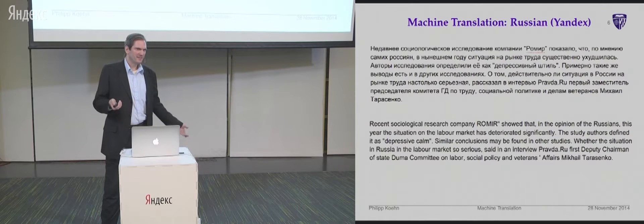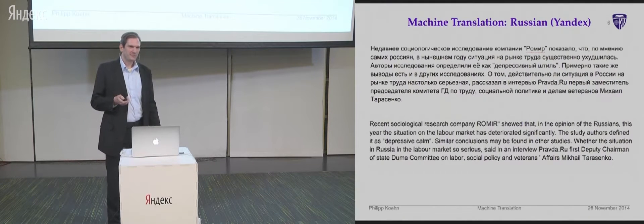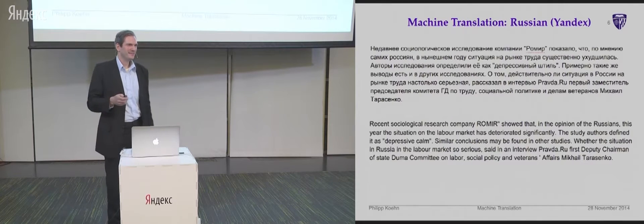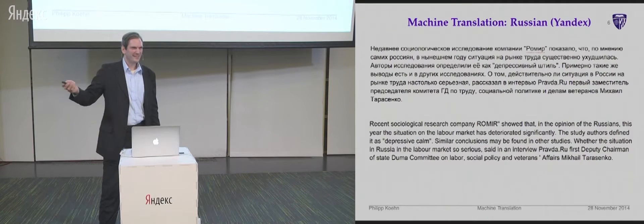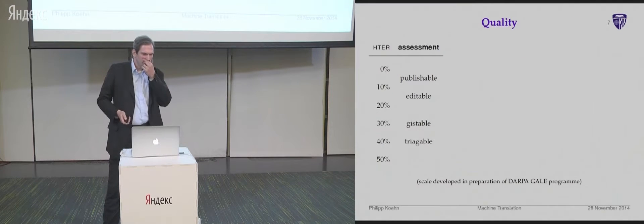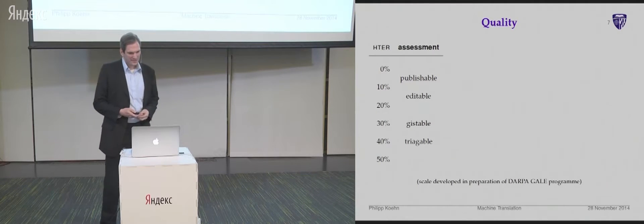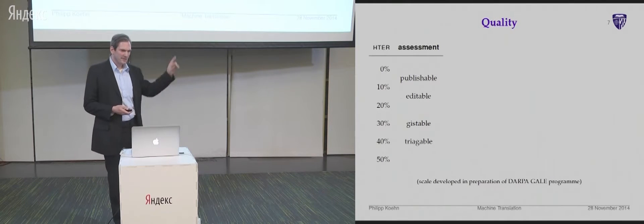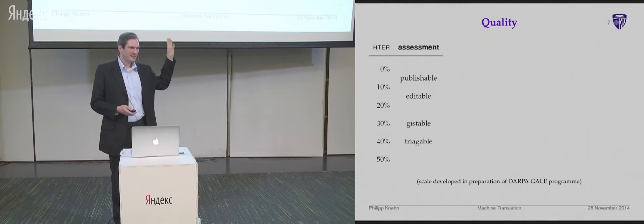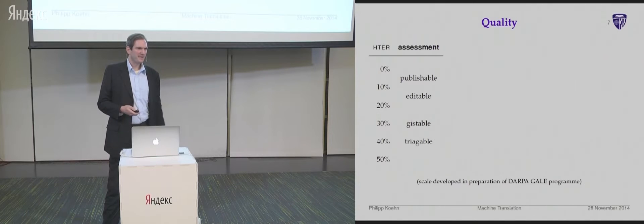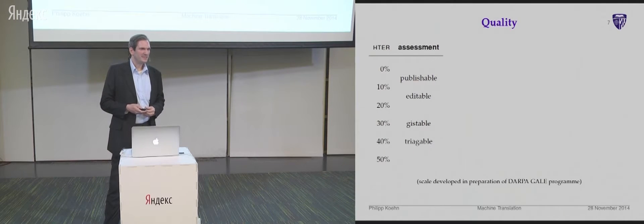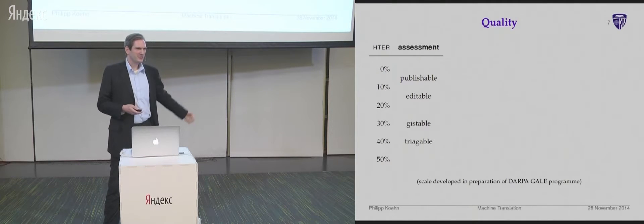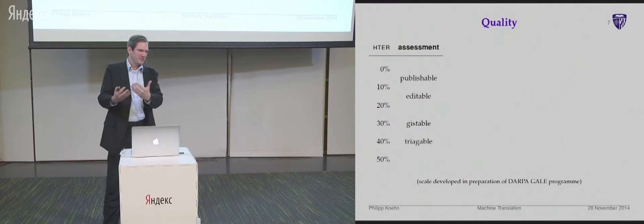Of course the question is: what is that actually good for? It's not perfect. Nobody who does machine translation research is going to promise things are going to be perfect, because we made that mistake in the past — we always said 'in ten years you're going to solve the problem, give us lots of money.' That's a great sales pitch, but the problem is ten years do pass and then you look pretty stupid. Here's a scale from DARPA, an American funding agency. HTR means how many words had to be edited to make it a perfect translation. They say five percent of words edited is publishable quality; fifteen percent edited is editable, gistable, and triageable — triageable meaning: is this text roughly about something relevant to me?